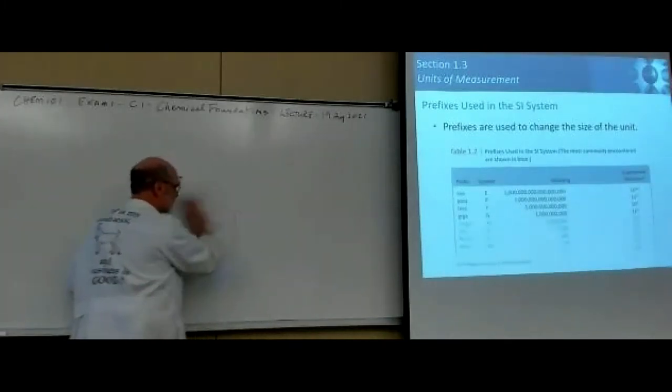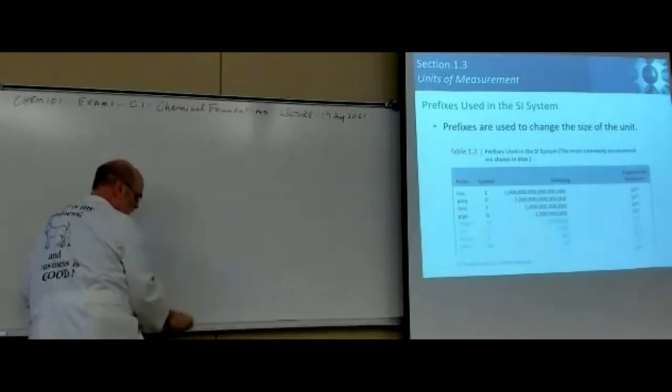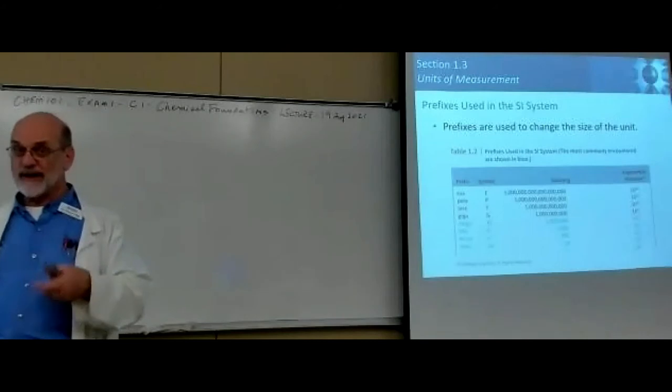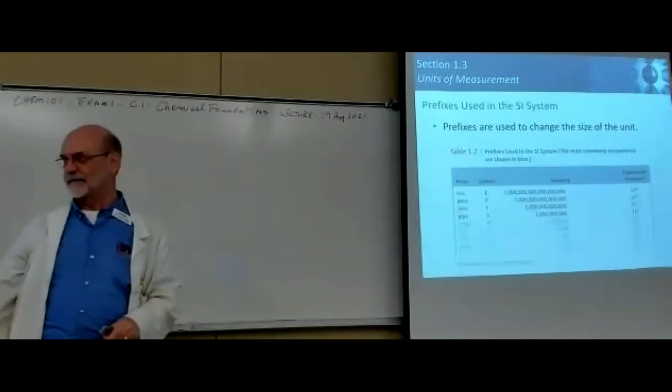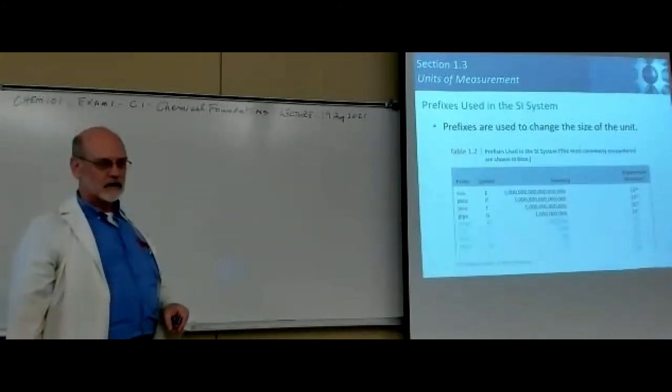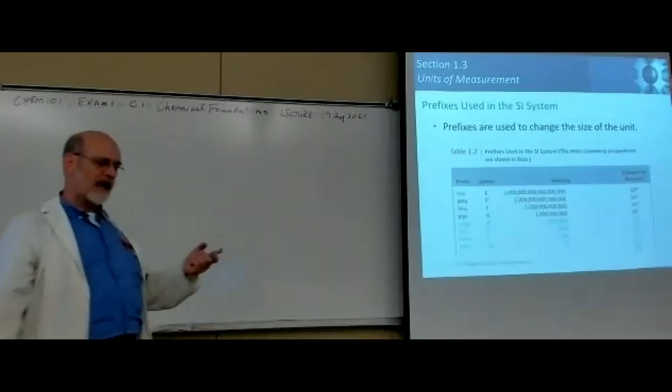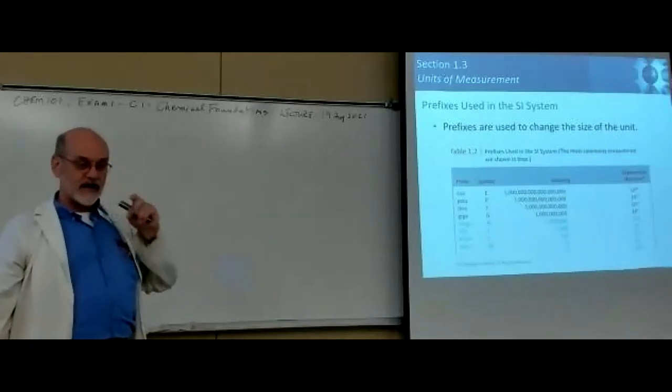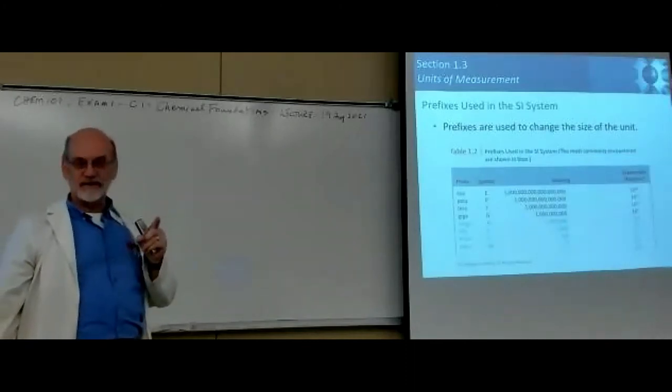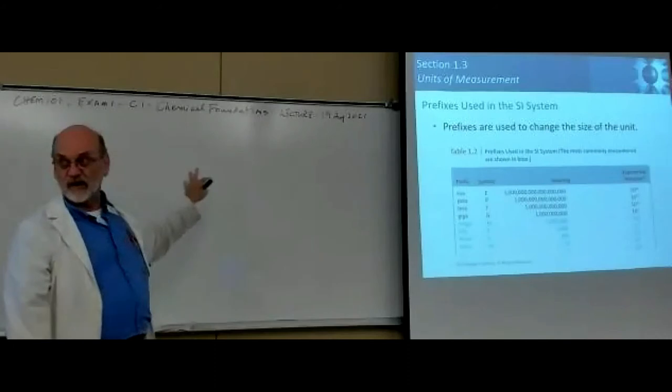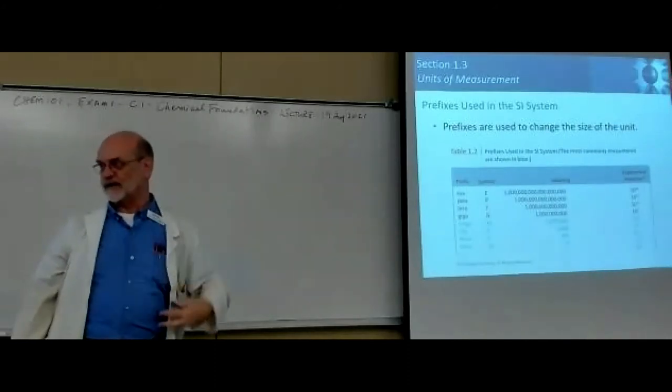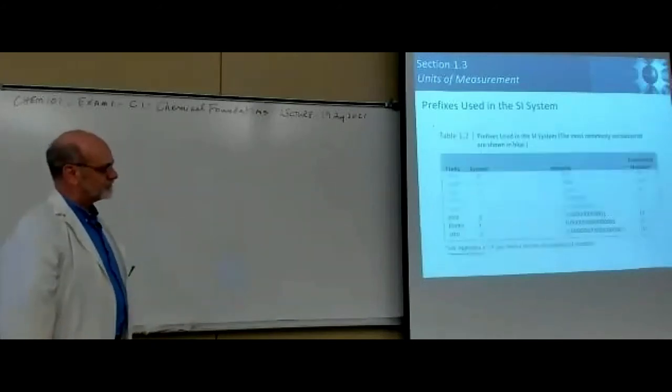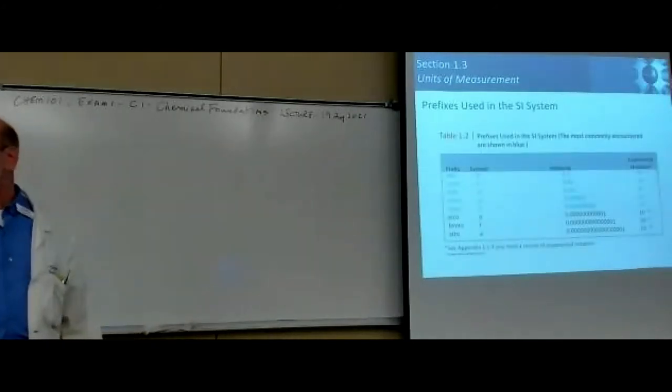For instance, if we say the distance between two points is 150 kilometers, what would that be in meters? Well, K means 1,000, right? So it's 150 times 1,000 meters, so it's 150,000 meters. You can go backwards and forwards as long as you know what the prefix means.